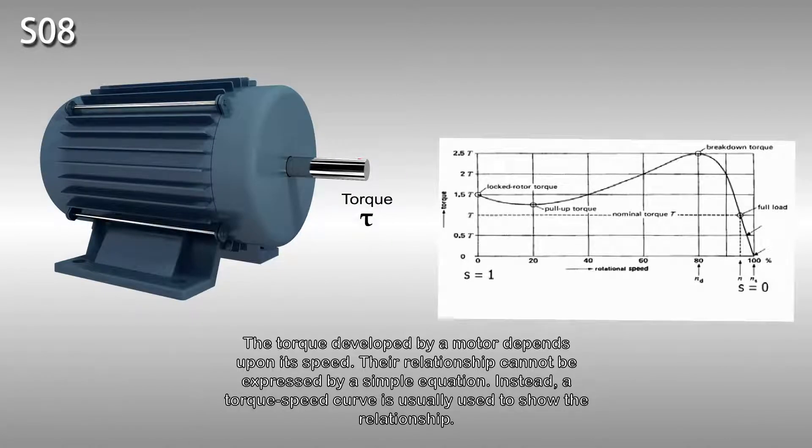The torque developed by a motor depends upon its speed. Their relationship cannot be expressed by a simple equation. Instead, a torque speed curve is usually used to show the relationship.